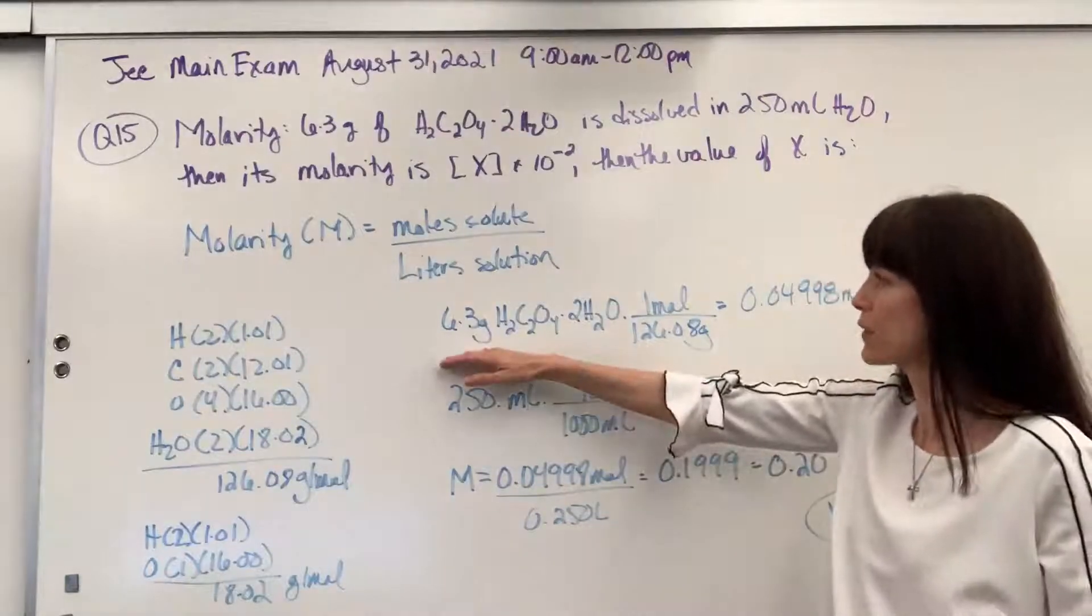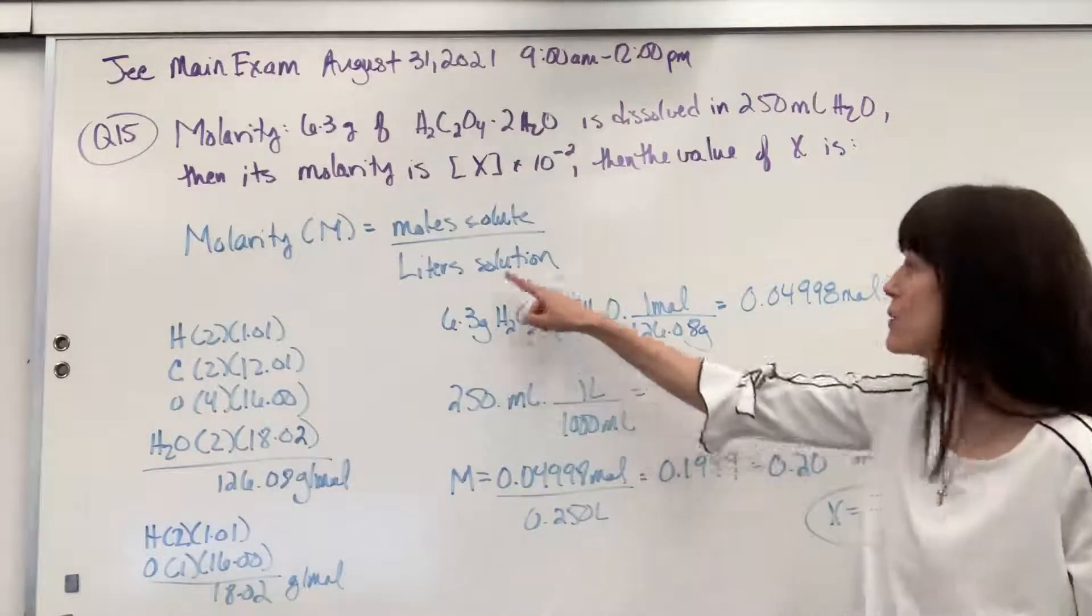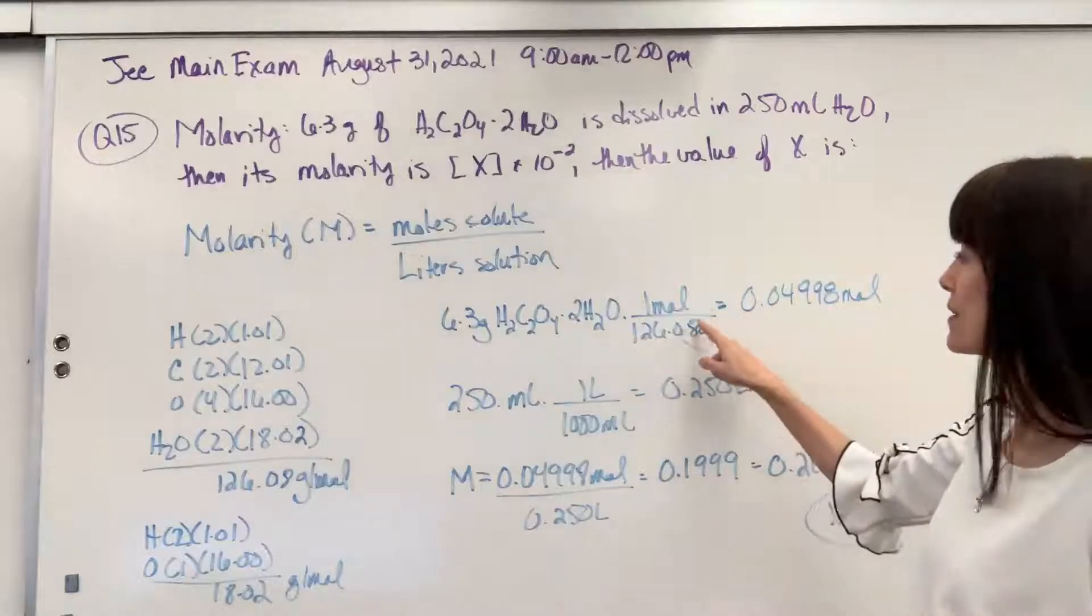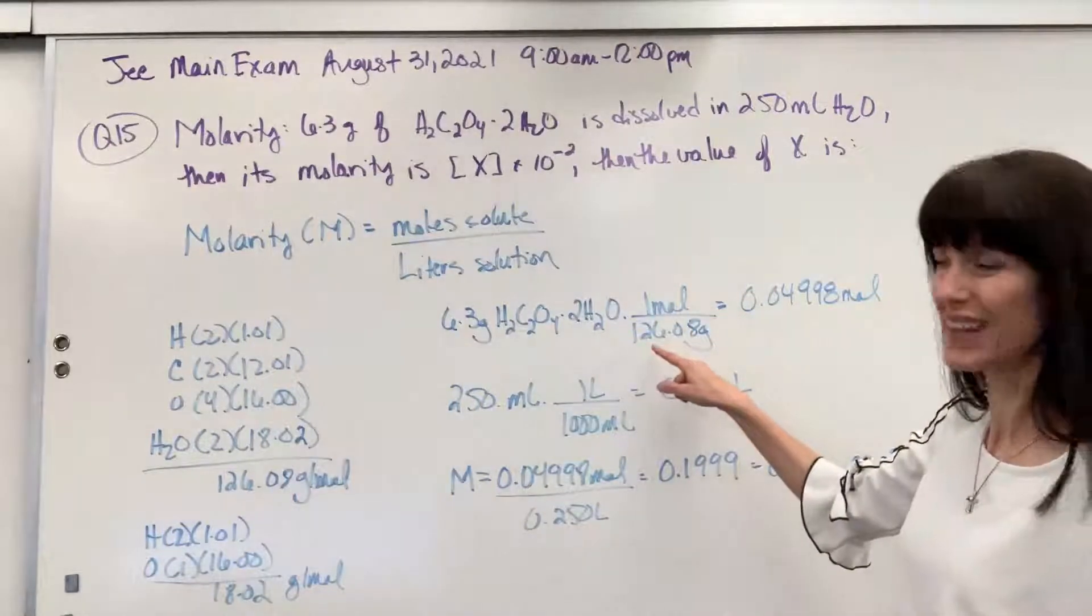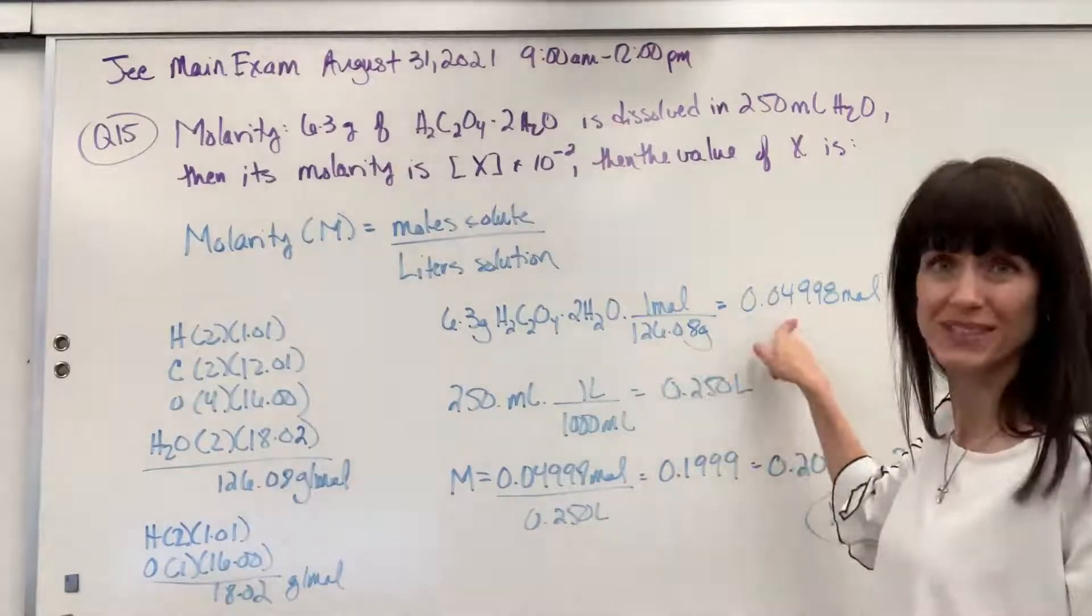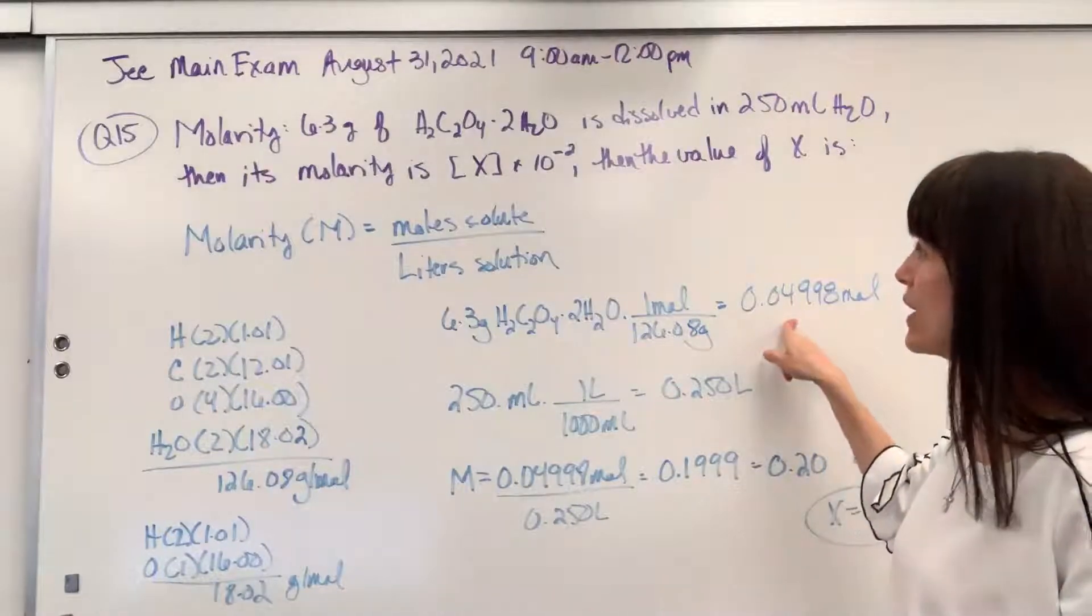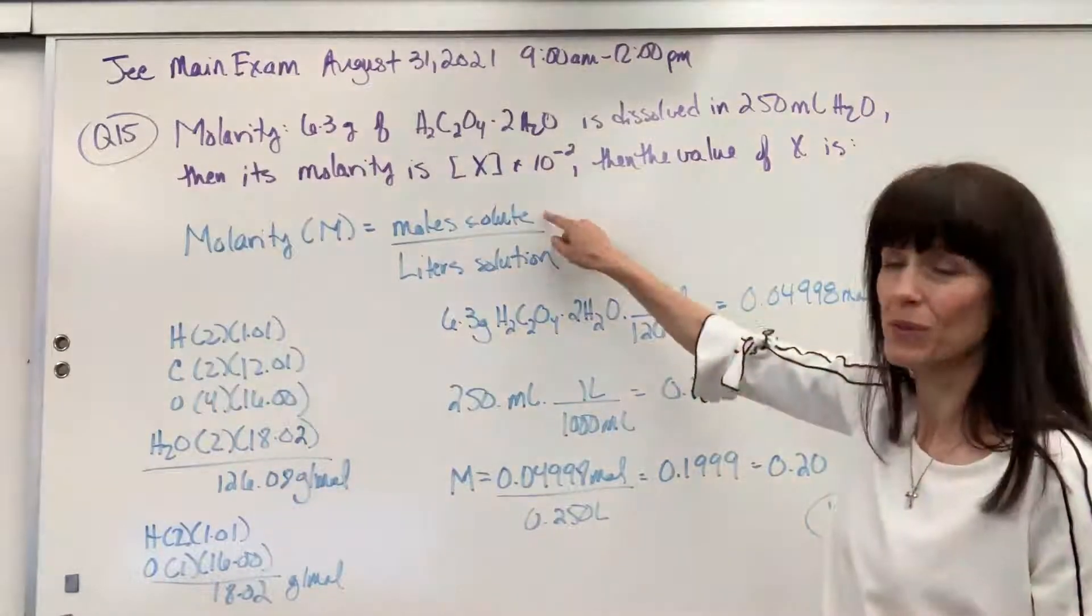So we have the 6.3 grams of oxalic acid dihydrate. We're going to bring that to moles. Look at this molar mass. I'll show you how to get that. Bring that to moles. I have my moles of the hydrate. That's what's going to go up here for the moles of the solute.